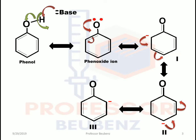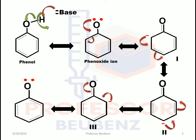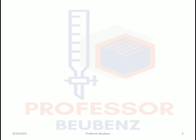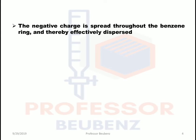In the next step, the negative charge again delocalizes into the bond, and the pi electrons shift to the next carbon atom to form resonance structure 3. Then the negative charge again delocalizes to form a double bond, and those shared pi electrons shift back to oxygen, regenerating the phenoxide ion. This cycle continues, with rapid resonance between the phenoxide ion and resonance structures 1, 2, and 3. The negative charge is spread throughout the benzene ring, effectively dispersing the electrons into the ring.